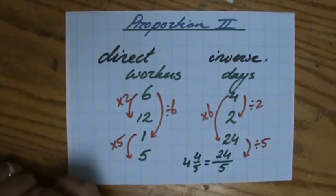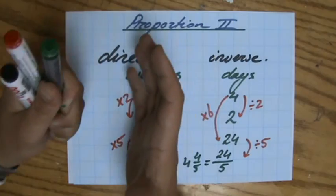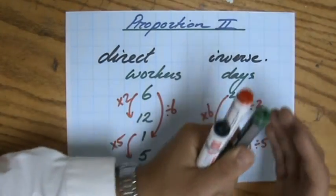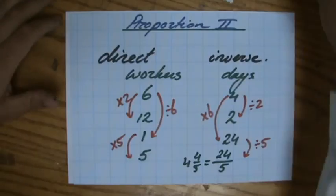Okay. So inverse proportion. If one variable becomes twice as big, the other variable becomes twice as small. So it's the opposite of direct proportion.